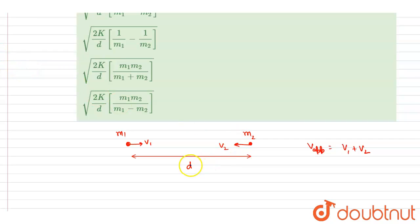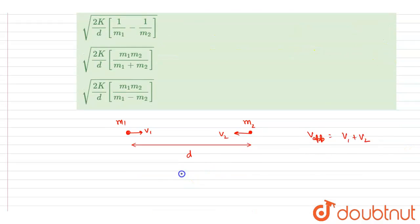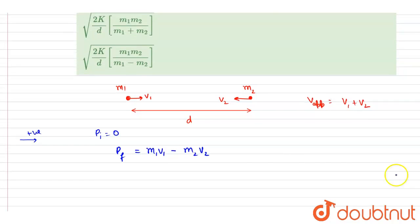There is no external force; this force is a mutual force acting on the two particles. So momentum will remain conserved. Taking right as positive, initial momentum was zero since they were at rest at infinity. Final momentum is m1*v1 minus m2*v2, and since there is no external force, it equals zero.